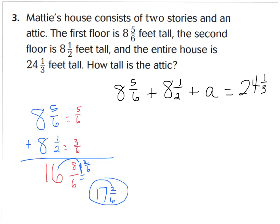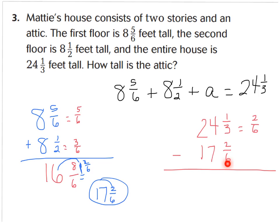Now we subtract this total from twenty-four and one-third, the total height of the whole house. We have twenty-four and one-third minus seventeen and two-sixths. Using sixths as the common denominator, one-third equals two-sixths. So twenty-four and two-sixths minus seventeen and two-sixths: two-sixths minus two-sixths is zero, and twenty-four minus seventeen is seven. The attic is seven feet tall.